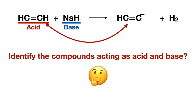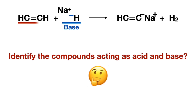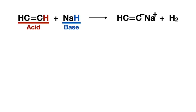Another way to determine which reactant is acting as an acid or base is to remove any alkali or alkaline earth metals, since they're hugely soluble and always leave as positively charged ions. When we do that on the second reactant, we see a negatively charged atom left behind, which makes it a base and therefore the other reactant an acid.